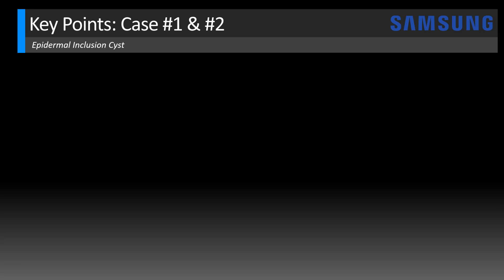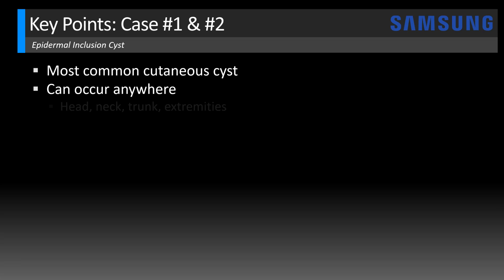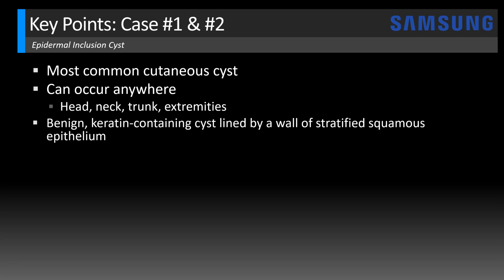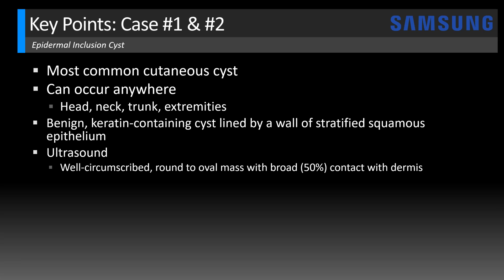Let's look at key points for these two cases. The epidermal inclusion cyst is the most common cutaneous cyst, and it can occur anywhere — along the head, neck, trunk, or extremities. These are benign cysts that contain keratin lined by a wall of stratified squamous epithelium. Peeling of keratin layers accumulates inside the cyst, giving it the characteristic ultrasound appearance, which is quite specific — studies show 93 to 99% specificity. Typically these lesions present as well-circumscribed round to oval masses with broad 50% contact with the dermis, as we saw in these cases.